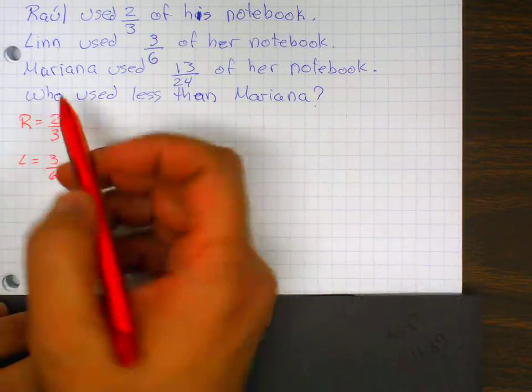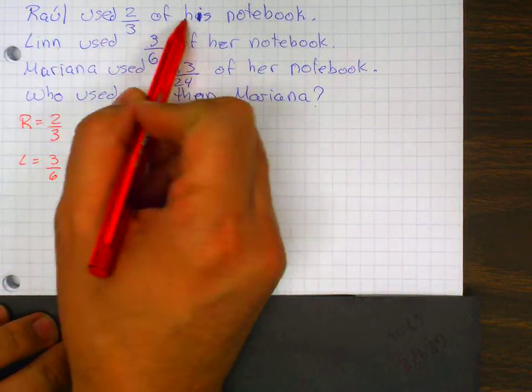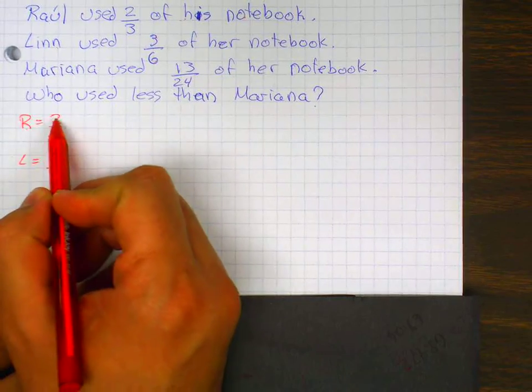So let's see this problem. It says Raul used two-thirds of his notebook. Here is Raul. He used two-thirds of his notebook.